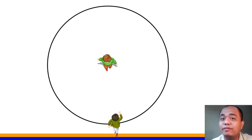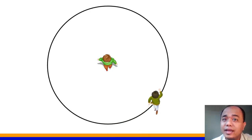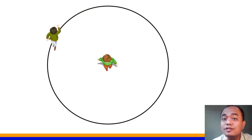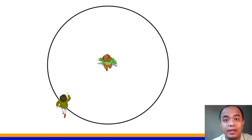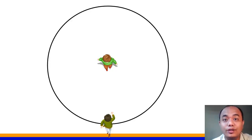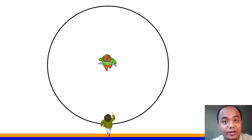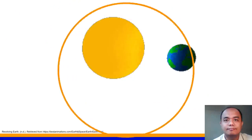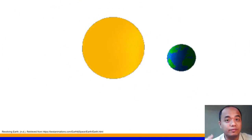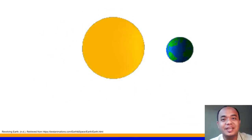Can you rotate and revolve at the same time? Yes, you can — but be careful. Walk slowly, and while walking, you also rotate. While you are rotating, you are also moving around the circle. Do it carefully and slowly. When you rotate and revolve at the same time, you are doing what you see here on the screen.